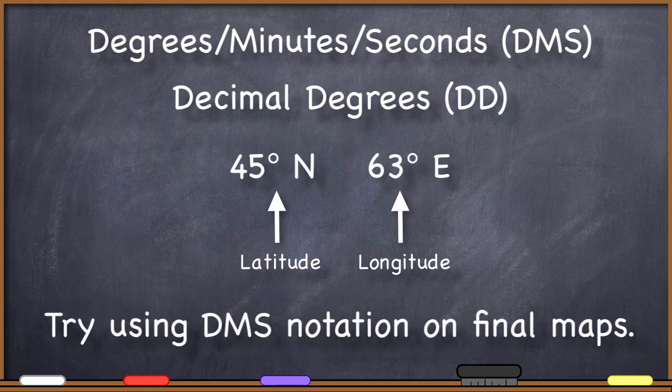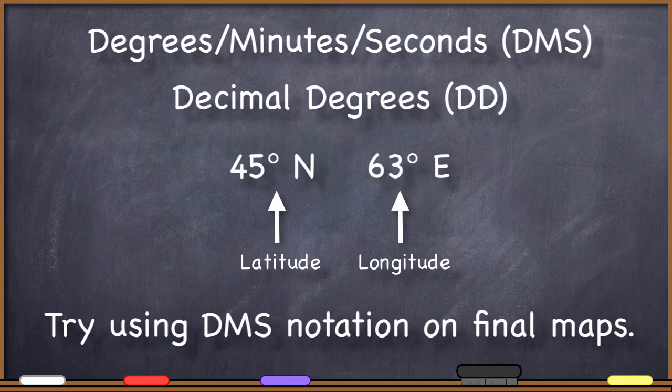I encourage you to use degrees, minutes, seconds format on final maps because I think it shows that you are able to understand the coordinates the software gives you and are able to convert them into the formal system that follows the geographic convention. But even if you do use the decimal degree format, make sure that all of the necessary information is present, all of the geographic standards have been followed, and that you clearly and unambiguously communicate the coordinates.